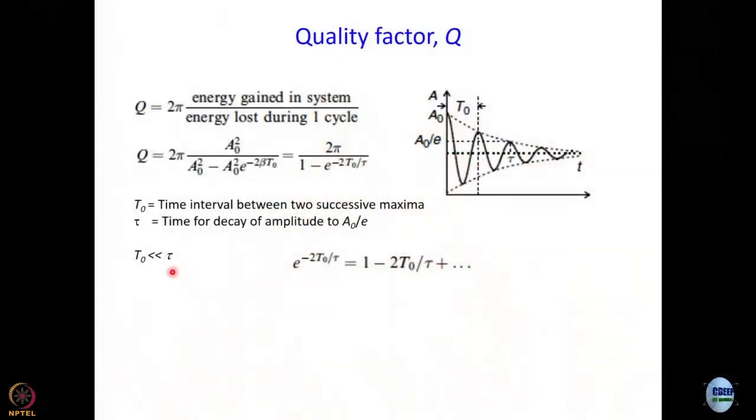T0 is much smaller than tau. How do I expand e to the power minus 2 T0 by tau? E to the power minus x when x is very small? 1 minus x. I can write something like this. Of course, there are higher terms, but as it always happens, higher terms, we are saying that this itself is very small. So, higher terms will be even smaller. So, we neglect them. We can just put e to the power minus 2 T0 by tau to be equal to 1 minus 2 T0 by tau.